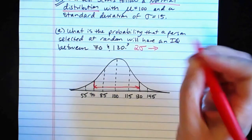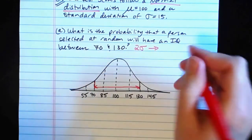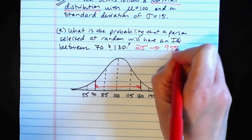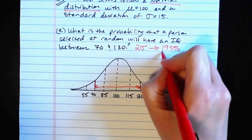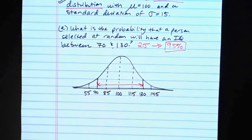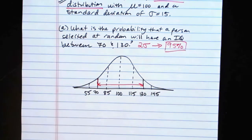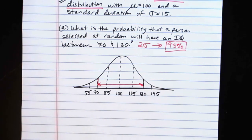According to the empirical rule, we would expect 95% of individuals to be within that range. So the probability that a single person selected at random will have an IQ between 70 and 130 is a 95% chance of occurrence, based on the empirical rule.